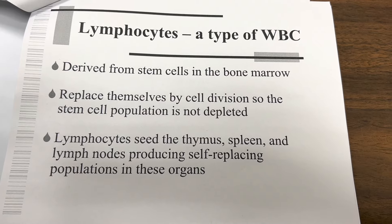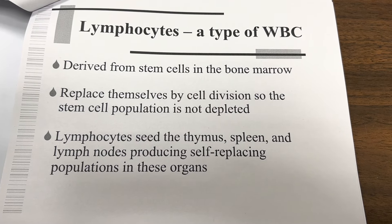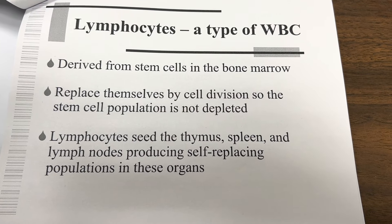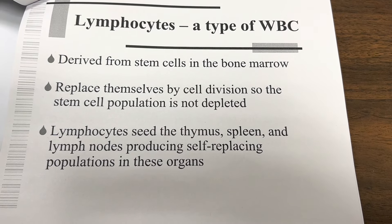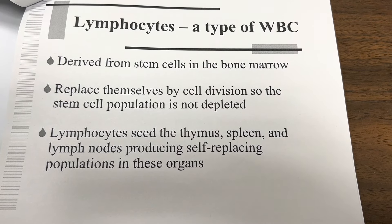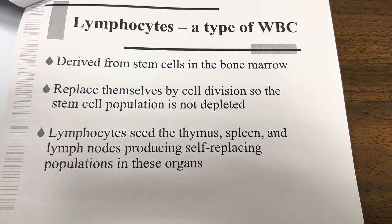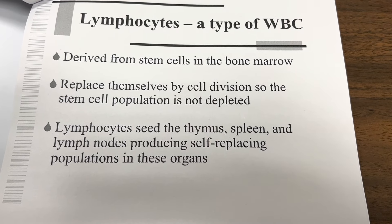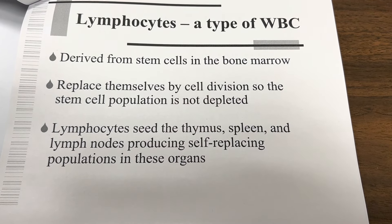Lymphocytes are a type of white blood cell derived from stem cells in the bone marrow. They replace themselves by cell division, so the stem cell population is not depleted. Lymphocytes seed the thymus, spleen, and lymph nodes, producing self-replacing populations in these organs.